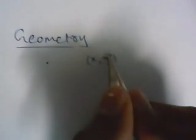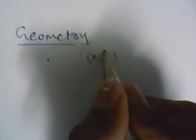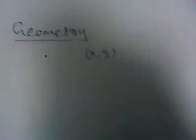Those two coordinates are the X coordinate and the Y coordinate, written as (X, Y). The first coordinate is called the X coordinate and the second coordinate is called the Y coordinate.